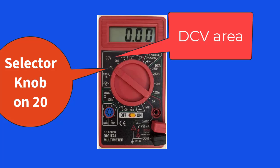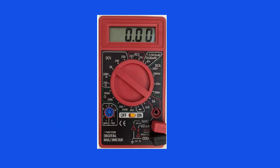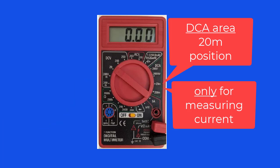Be careful not to set the selector knob on the 20M position in the DCA area. The 20M position is just for measuring current, and if you set the selector knob there and try to measure voltage, it will blow the internal fuse or damage your meter.